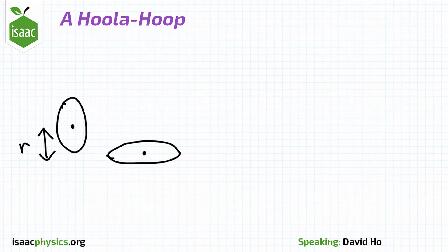We can use the equation for gravitational potential energy. V is equal to mgh, and in this case is equal to mgr.